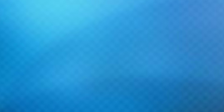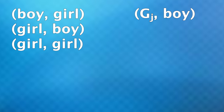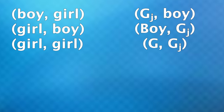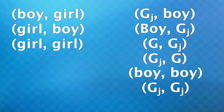Another way to see this: before, once told one child is a girl, we had three equally likely options since we didn't know birth order. But now, given one girl named Julie, there are four options: a girl named Julie and a boy; a boy and a girl named Julie; a girl not named Julie and a girl named Julie; and the same thing reversed. The only other possible options — two boys or two girls named Julie — can't happen given our constraints. These four options are equally likely and two involve two daughters, giving a 50% chance.